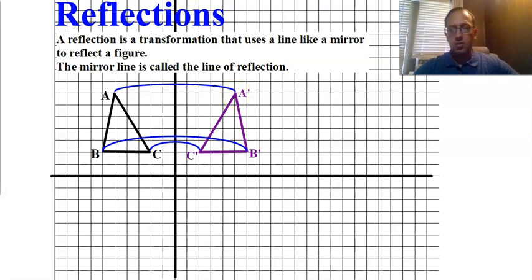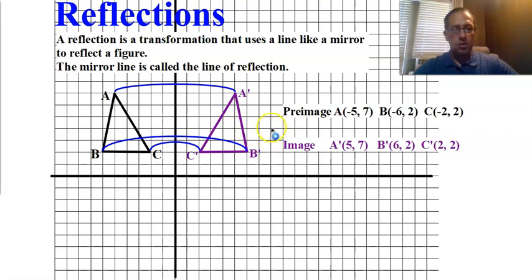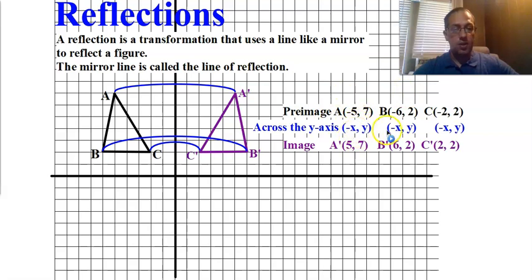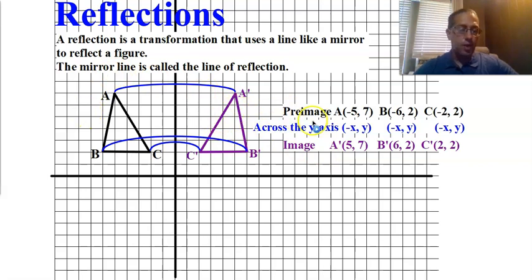Now, let's take a look at the coordinates. Remember, the pre-image is what comes first; the image is the new figure. Look at the coordinates of the pre-image and the image — what do you notice? All that happened is the x value changed signs. The x value was negative five, it turns into positive five. The x value of negative six turns into positive six. X of negative two turns to positive two. And the y values all stay the same.